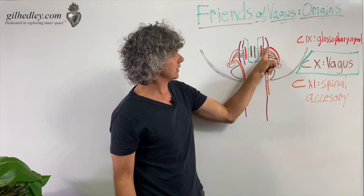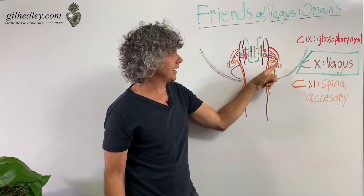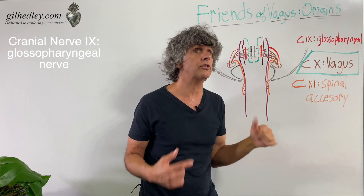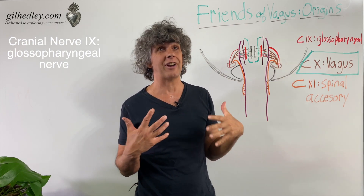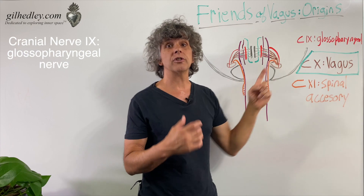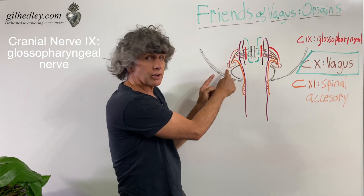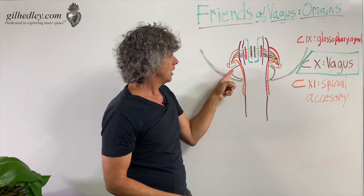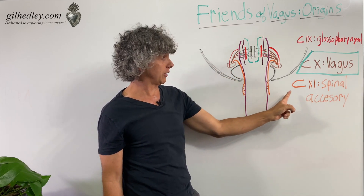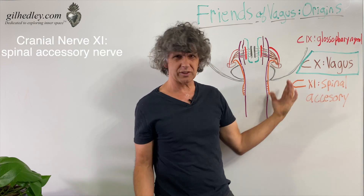One is cranial nerve nine — I did it in red just for fun. Cranial nerve nine is the glossopharyngeal nerve: 'glosso' going to the tongue and 'pharyngeal' to the pharynx or pharyngeal constrictors. So the glossopharyngeal nerve passes through the jugular foramen as well.